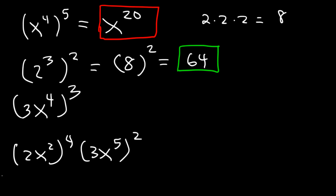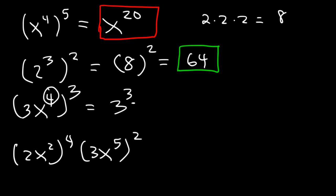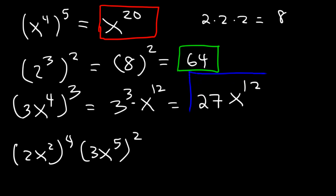Now for the third one — 3x to the fourth raised to the third power — we need 3 to the third power. The coefficient: 1 times 3 is 3, and for the exponent 4 times 3 is 12, so it's x to the 12th. Now 3 cubed is 3 times 3 times 3, which is 27. So the final answer is 27x to the twelfth power.